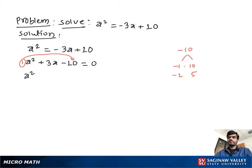We find a pair of numbers which when multiplied give us -10 and when added give us positive 3. That number is -2 and 5. So write a² - 2a + 5a - 10 = 0.